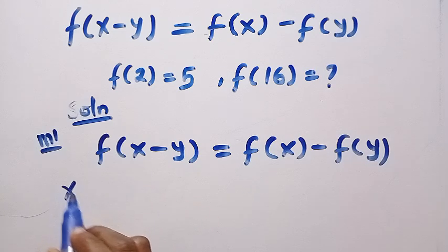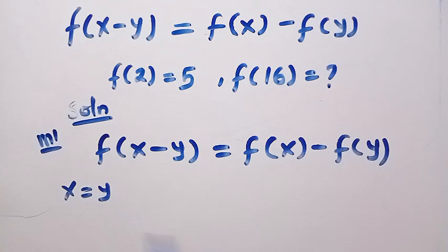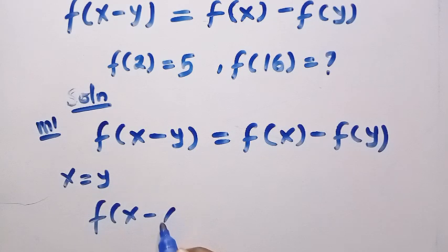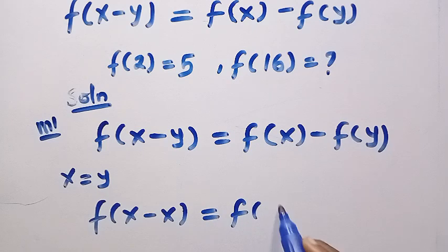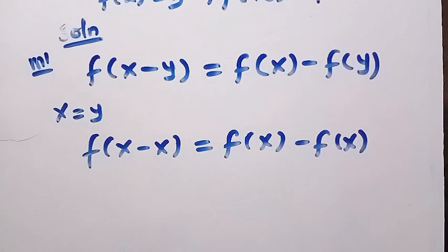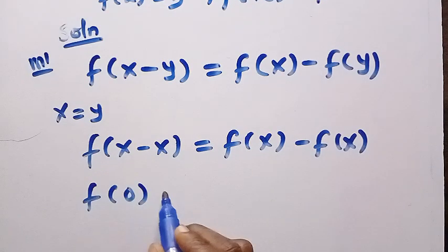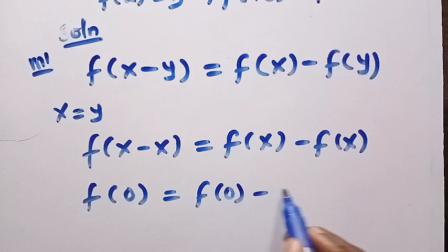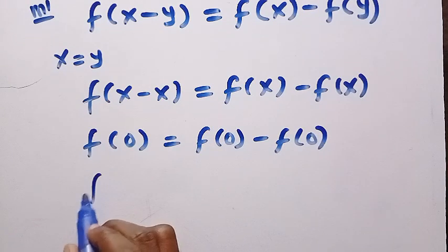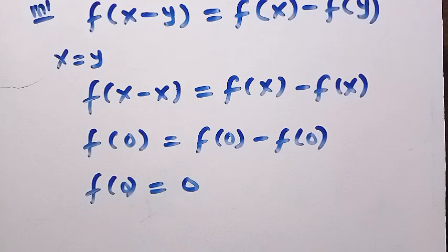Let's say I let x equal y. Anywhere we see x, we replace it with y, or anywhere we see y, we replace it with x. So we are going to have f of x minus x equals f of x minus f of x. With this, we have f of 0 equals f of 0 minus f of 0. And f of 0 minus f of 0 shows that f of 0 equals 0.